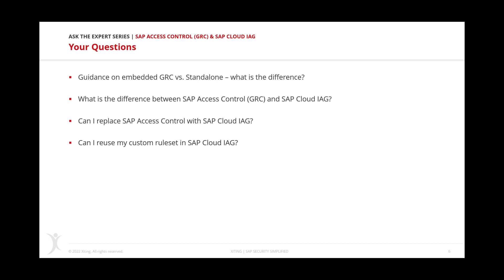IAG includes access risk analysis with a rule set to analyze users and roles for SOD conflicts, critical access, and sensitive access. It has access request management with workflow-driven approaches, firefighting capabilities, review and recertification capabilities like user access review, and business role management for creating and reusing roles in provisioning. It's an entirely new solution that doesn't necessarily replace Access Control — for most customers it's more of an extension of their current Access Control installation.